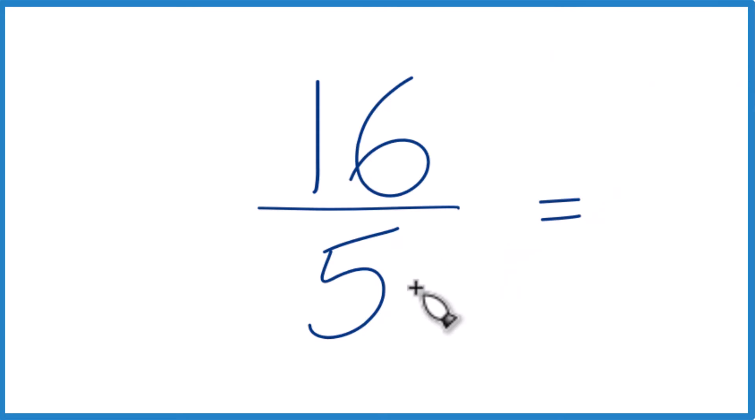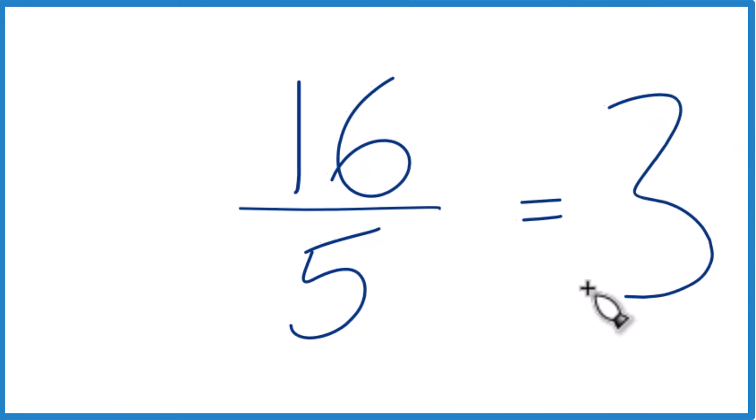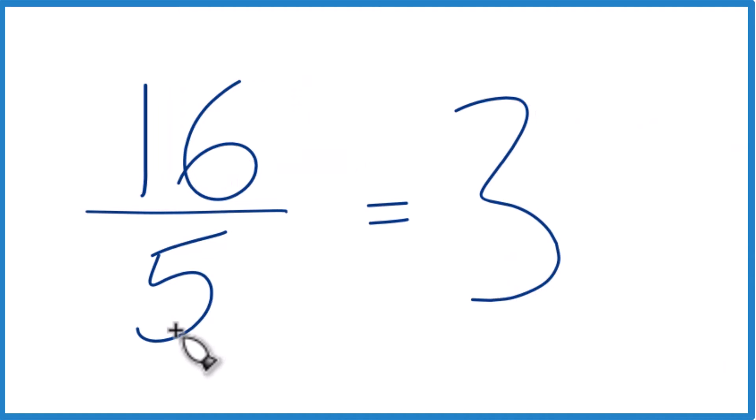So we take 5, see how many times that goes into 16. So 3 times 5, that's 15. So let's put a 3 up here. 3 times 5 is 15.